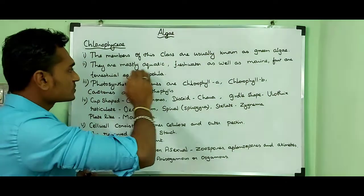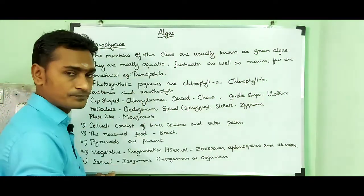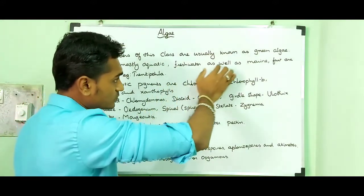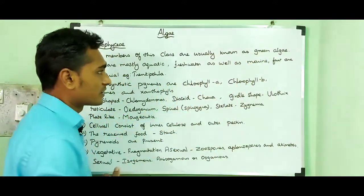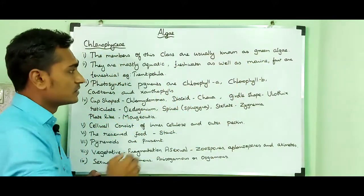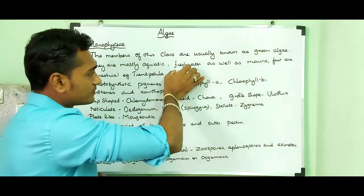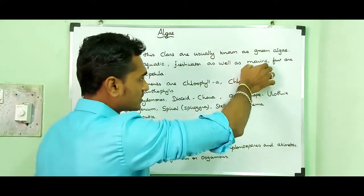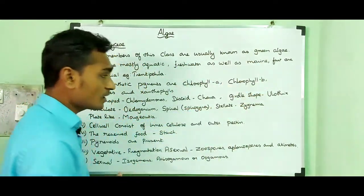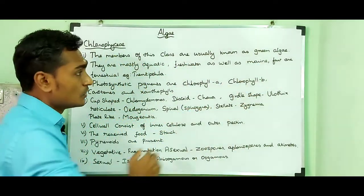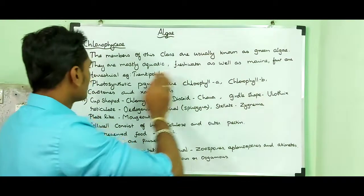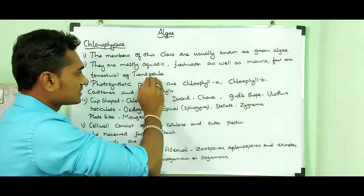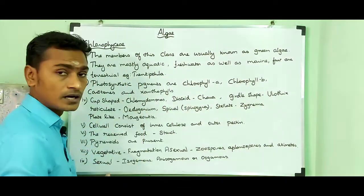They are mostly aquatic — freshwater as well as marine water. The example for freshwater is Spirogyra. The example for marine water is Ulva. Few are terrestrial; for example, Trentepohlia.